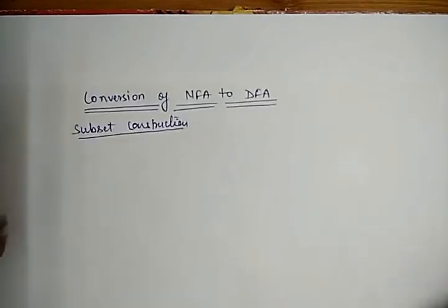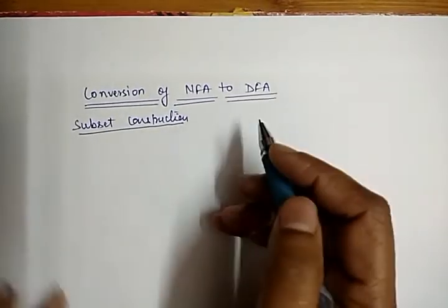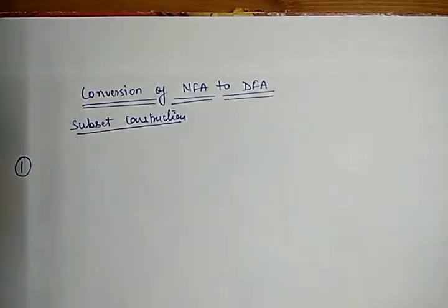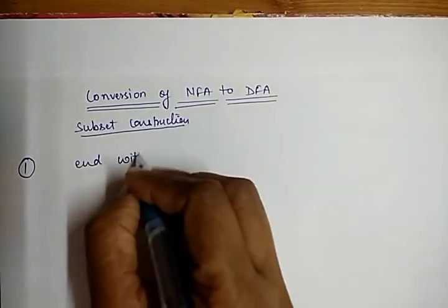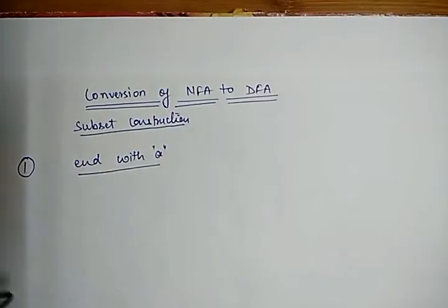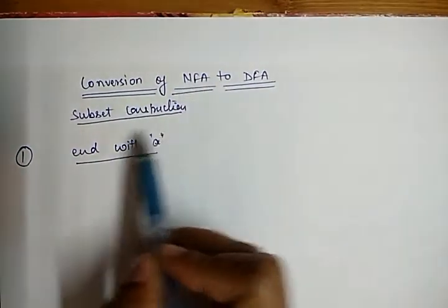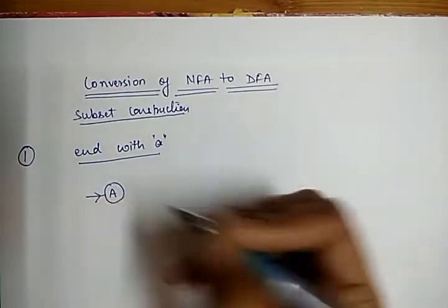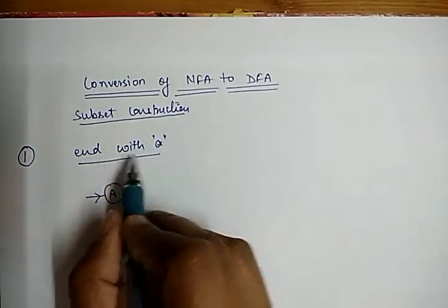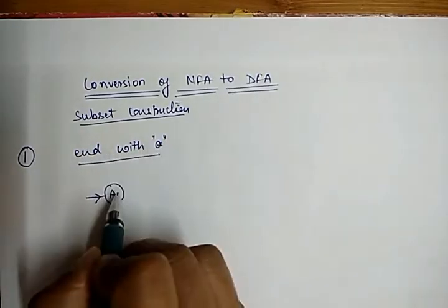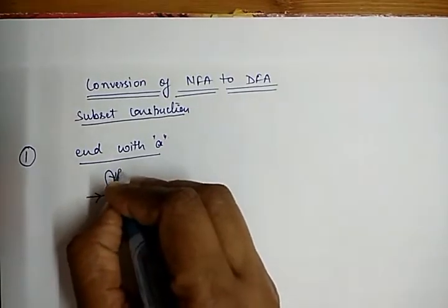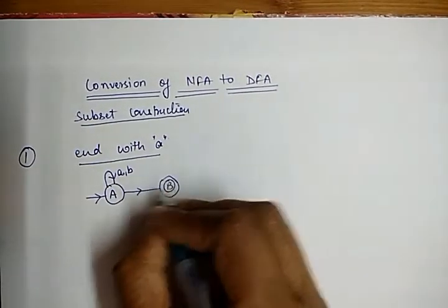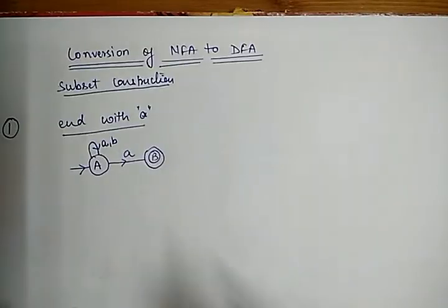I will explain two examples of how we convert NFA to DFA. We start with the first example: converting an NFA to a DFA for a language which ends with 'A'. First, I create an NFA for this language. If 'A' is the initial state, I only care that the string ends with 'A' — I do not care what comes at the beginning. In the beginning, either 'a' or 'b' can come. This is how we create the NFA for this language.